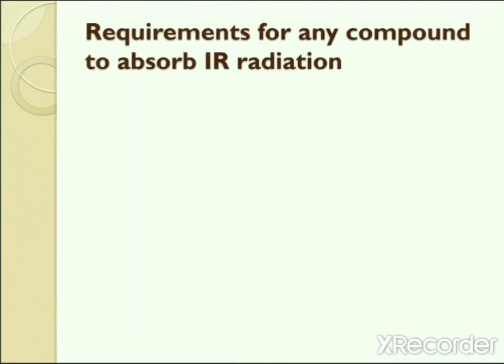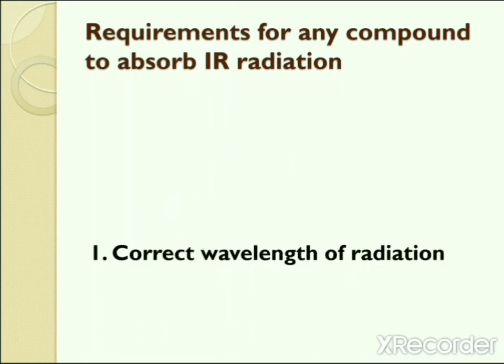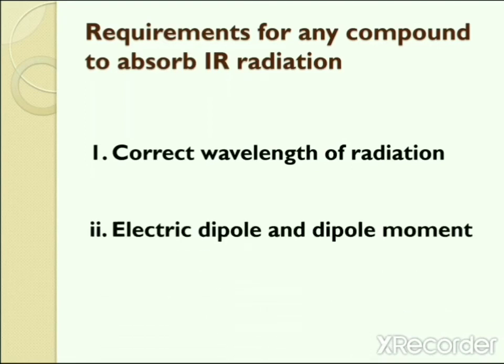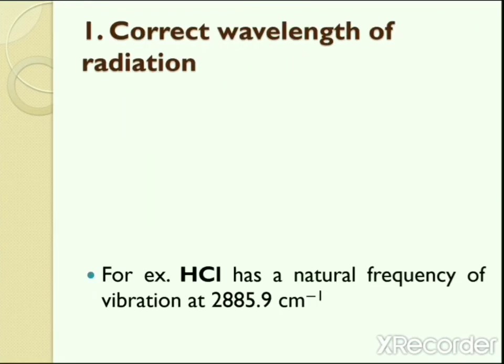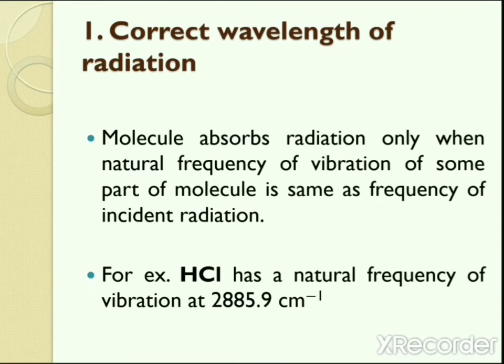There are two main conditions necessary for any compound to absorb infrared radiation. The first is the correct wavelength of radiation: a molecule absorbs radiation only when the natural frequency of vibration of some part of the molecule is the same as the frequency of the incident radiation. For example, the HCl molecule has a natural frequency of vibration at 2885.9 cm⁻¹, so HCl will absorb radiation only when the incident radiation contains this frequency. If this frequency is absent, HCl cannot absorb any radiation.